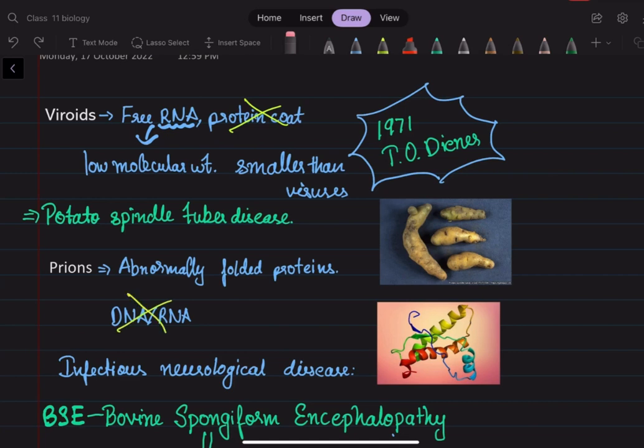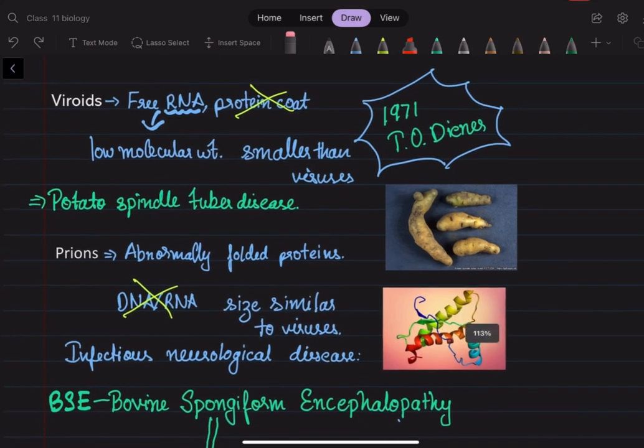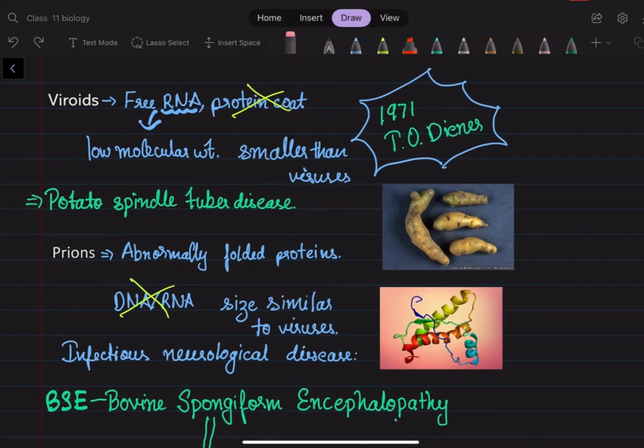They do not have DNA or RNA, they are just proteins, and their size is similar to that of viruses. You can see in this picture they are abnormally folded proteins.